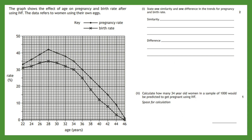Calculate how many 34-year-old women in a sample of 1000 would be predicted to get pregnant using IVF. We look at the 34 age range on the graph and, since it's already expressed as a percentage, we find the pregnancy rate for 34-year-olds, which is sitting at 35%. So 35% of 1000 gives us 350.